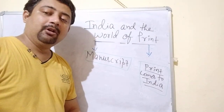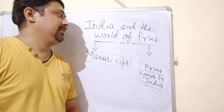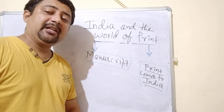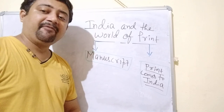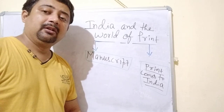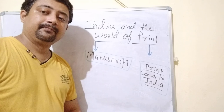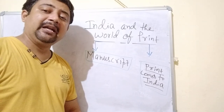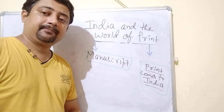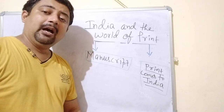Dear students, this is the 8th video of the chapter Print Culture and the Modern World. Today we are going to discuss a sub-topic: India and the World of Print. So far we discussed that print culture started its journey from China, thereafter it reached Europe, and we discussed how the print revolution was created in Europe. We also discussed the influence of print on different segments of society. In the last video we discussed how print targeted new readers in the late 19th century, and we came to realize that print almost created a new type of society.